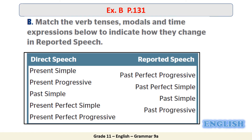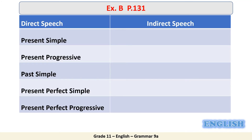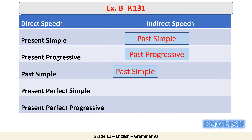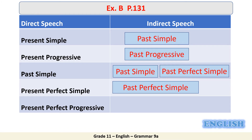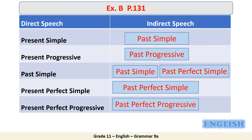Let's go now with Exercise B, page 131, and look at the changes from the direct into the reported or indirect speech. We begin with the tenses — we have five tenses here. Present simple becomes past simple. Present progressive becomes past progressive. Past simple can remain as past simple or we can change it into the past perfect simple. Present perfect simple will be changed into the past perfect simple. And present perfect progressive changes into the past perfect progressive. As you notice from the table, any present becomes a past.